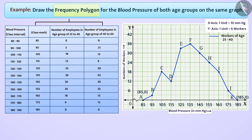The class marks and the frequency of imaginary class intervals are the same in both cases, so their coordinates will be the same in both cases. Hence, the first point will be A (85, 0) and the last point will be K (185, 0) in both cases.